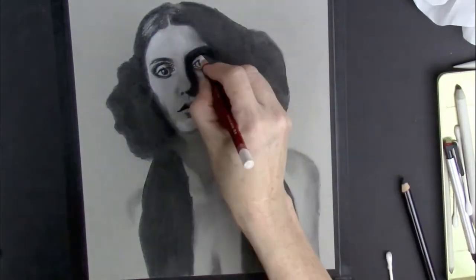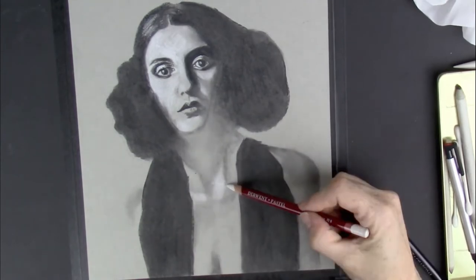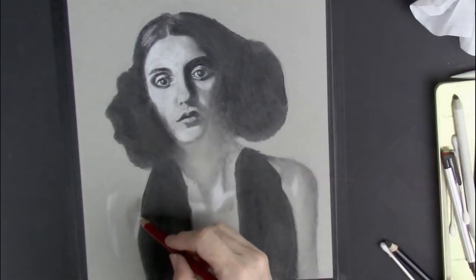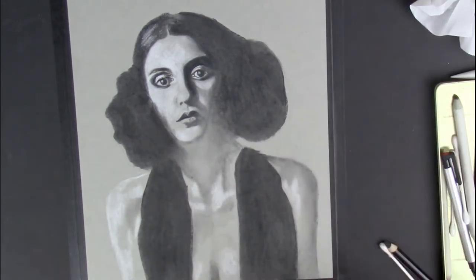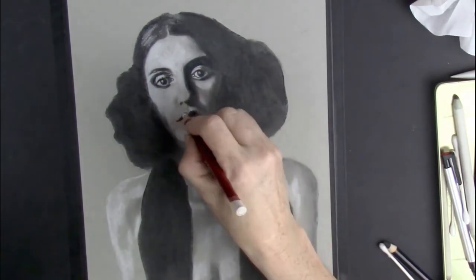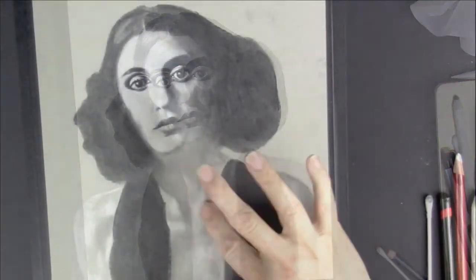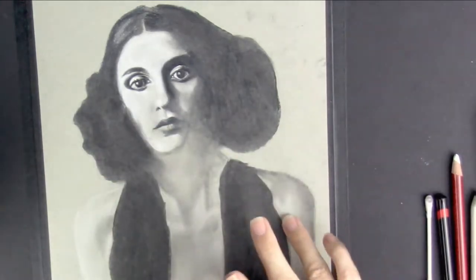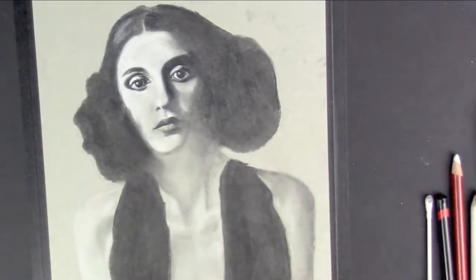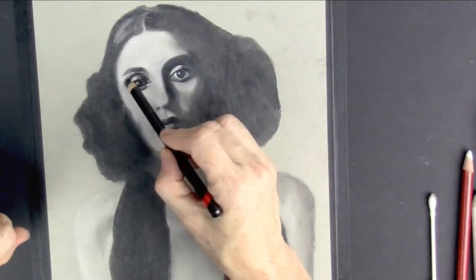And then I'm going in quite liberally with the Chinese white pastel pencil to really draw out some of those white highlights but also to add contouring into her area from the neck down. And you can be really bold with these movements. Don't worry about putting too much pigment down or mark making. It can all be blended in at a later date.